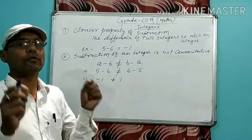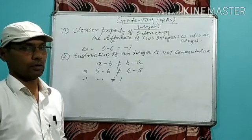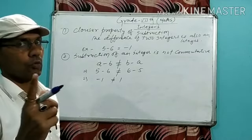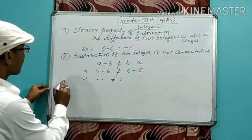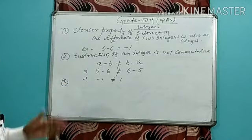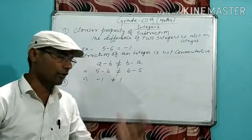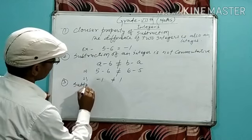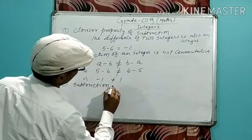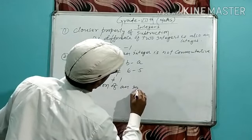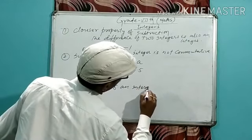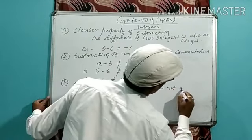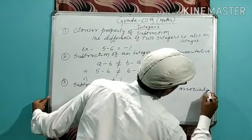Commutative means if we change the order of two integers, the result would be equal — but that does not hold here for subtraction. Third: subtraction of integers is not associative.